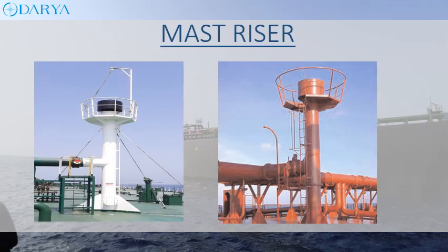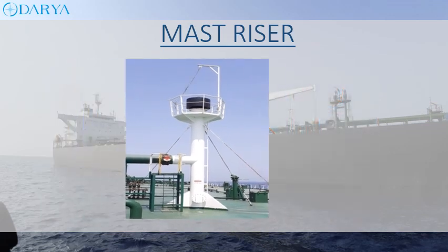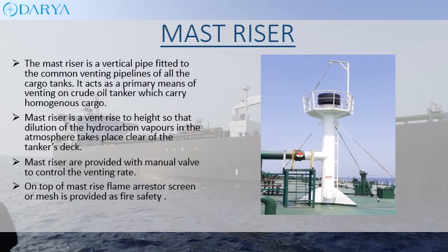The mast riser is a vertical pipe fitted to the common venting pipelines of all cargo tanks. It acts as a primary means of venting on crude oil tankers which carry homogeneous cargo. The mast riser is raised to a height so that dilution of hydrocarbon vapors in the atmosphere takes place clear of the tanker's deck. Mast risers are provided with a manual valve to control the venting rate, and a flame arrester screen or mesh is provided for fire safety.